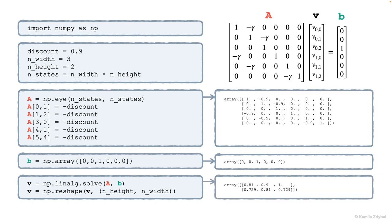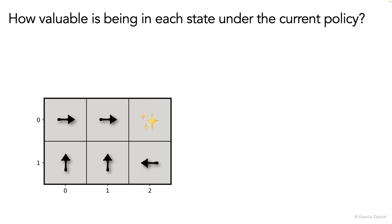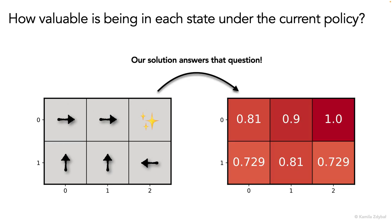And this is our solution. So we can visualize these unknown values. We now have the answer to the question: how valuable is being in each state under the current policy? And our linear equation solver gave us the exact answer. So we started off with this policy in this environment, and now these numbers specify how valuable it is to be in each state given that policy.